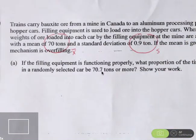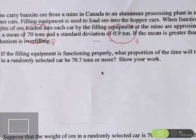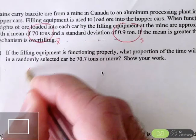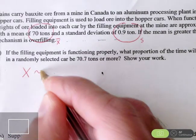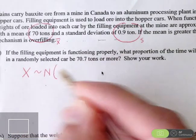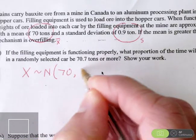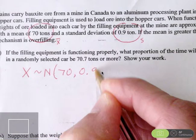The information given to us here suggests that if x represents the amount of ore put into a particular hopper car, it is distributed normally with this mean, 70 tons, and a standard deviation of 0.9 tons.